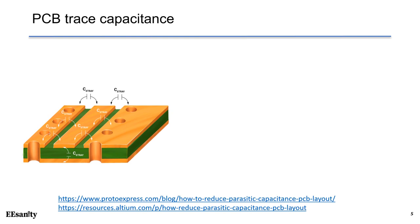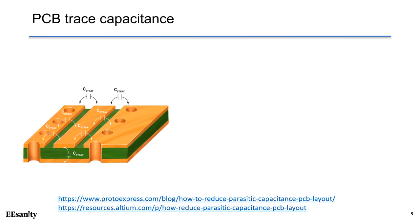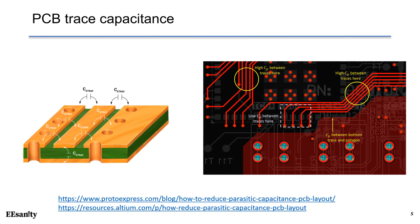Here is another illustration about PCB trace capacitance. Between traces, and between a trace and a polygon on the top layer, stray or parasitic capacitance can be created. Furthermore, in between the top layer and the bottom layer, since we have a large bottom polygon, we also have parasitic capacitance in between. On the top layer, we have traces in parallel that can be quite near to each other. If they are close, we can have high capacitance between traces.